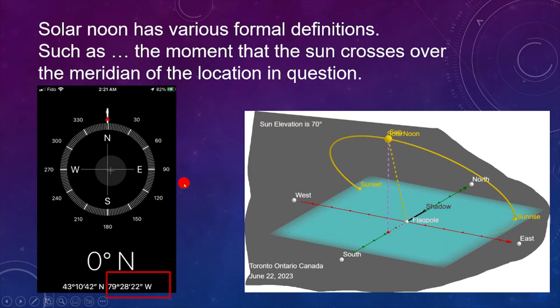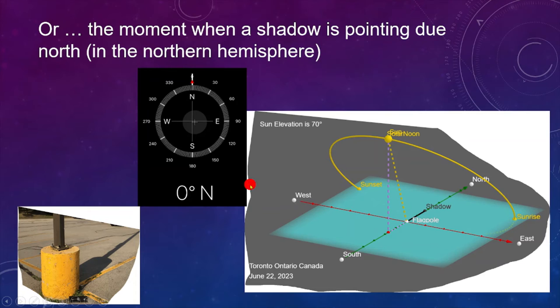Solar noon has various formal definitions, such as the moment that the Sun crosses over the meridian of the location in question. Here I'm saying flagpole, could be stop sign or light post, what have you, or the moment when the shadow is facing due north, pointing due north.